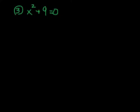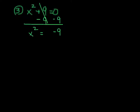Let's move on to number 3. We're going to follow the same procedure as we did in number 1 and number 2, and we're going to get x squared by itself by moving the 9 over. So we're going to get x squared equals negative 9. We're going to take the square root and have a plus or minus in front, so the square and the square root cancel each other out, and we get x equals plus or minus the square root of negative 9.